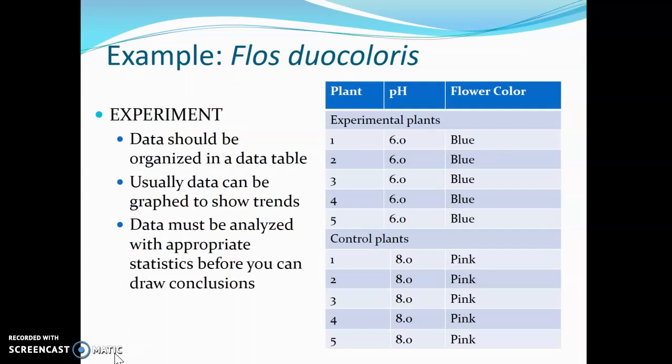So now we have our data. We ran the experiment and recorded all of our data in a nice data table — it keeps everything nicely organized. Anytime you're recording data, you want to make sure that you are labeling it in some way. So if you write down or type a number, you need to make sure there's a label. In this case we've got our experimental plants, our control plants, the plant number, the pH — everything is labeled. If you write down a number and you don't have a label on it, it's just a number — it's not data.